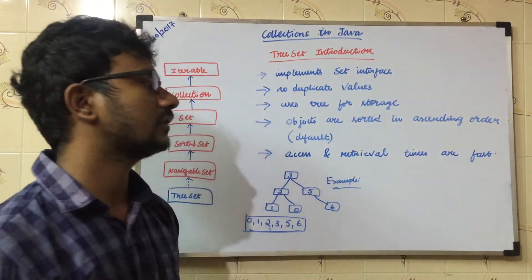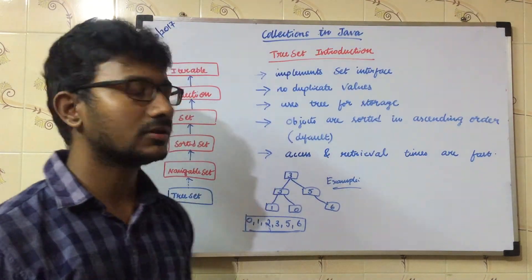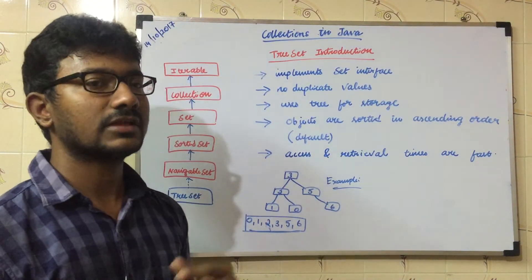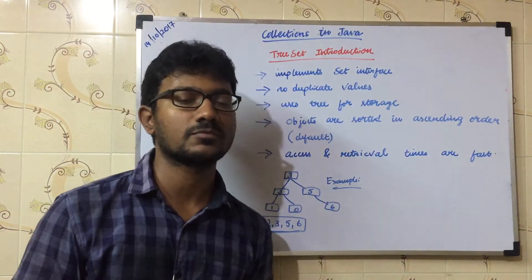Access and retrieval times are very fast. The reason for that is the data structure. Here we are using tree. That's the reason why the access and retrieval times are faster.